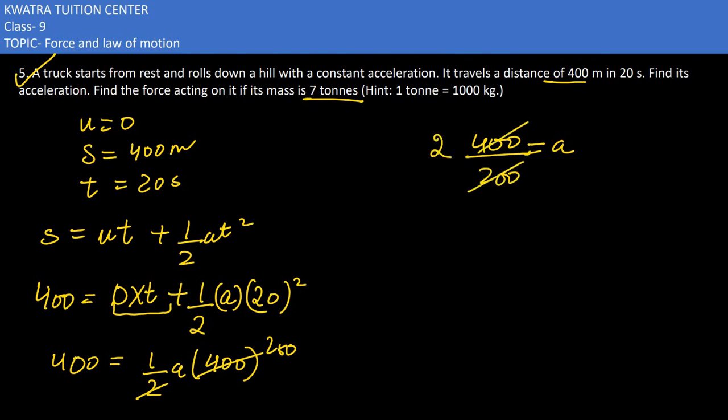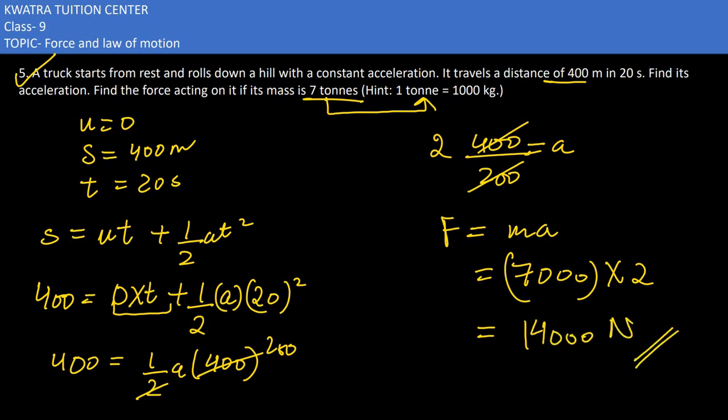Now I need to find the force, which I know is mass into acceleration. Mass in this case is 7 tons, and in one ton you have 1000 kilograms, so the mass in kilograms is 7000. Acceleration here would be 2, so your answer will be 14,000 Newtons in this case.